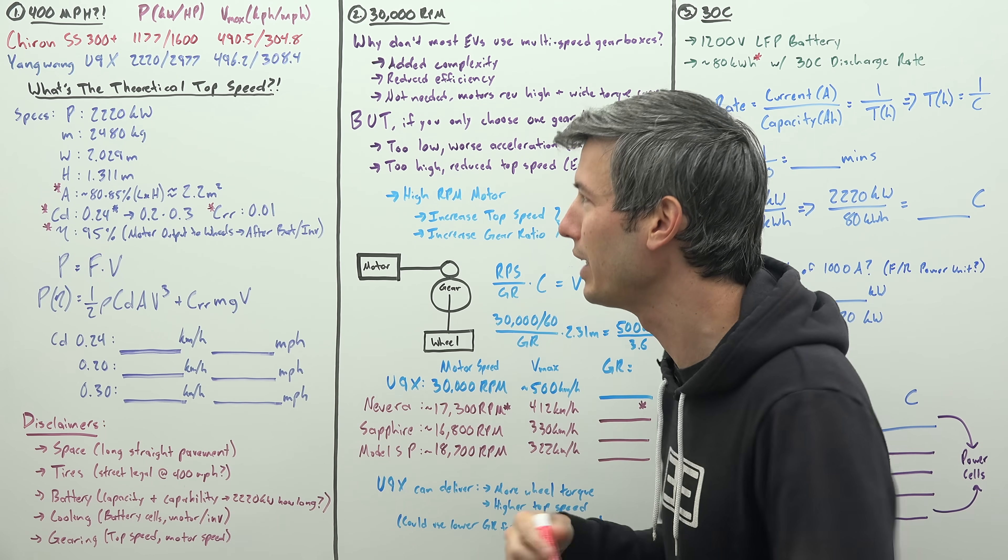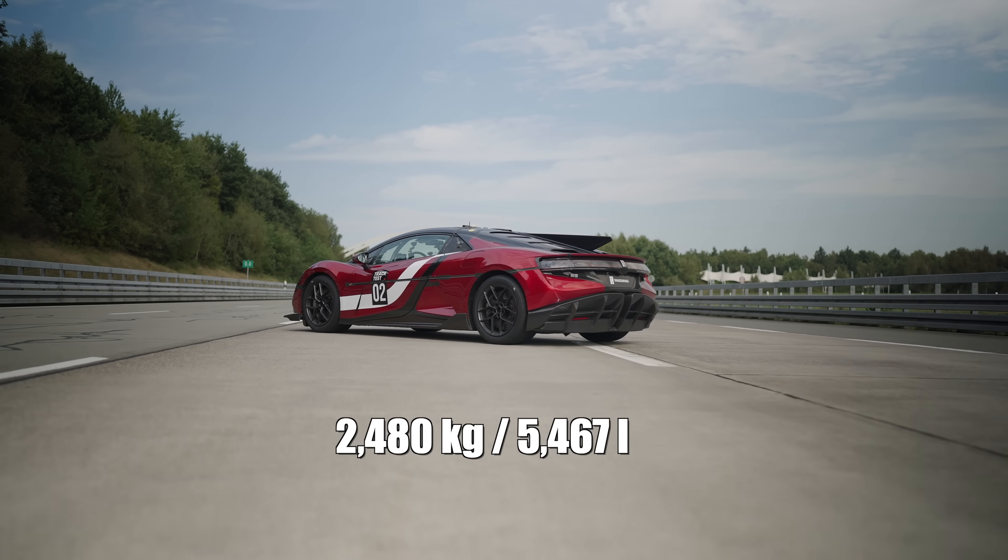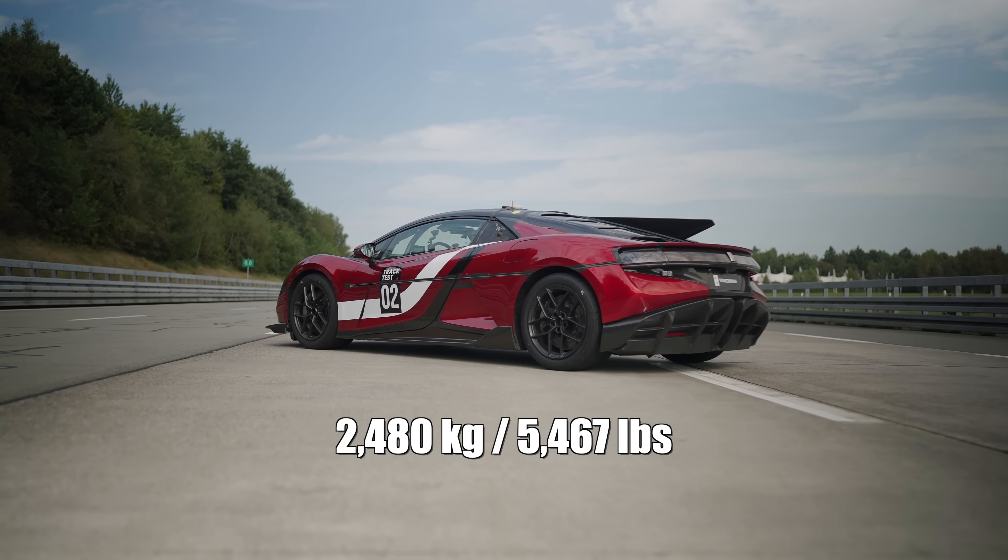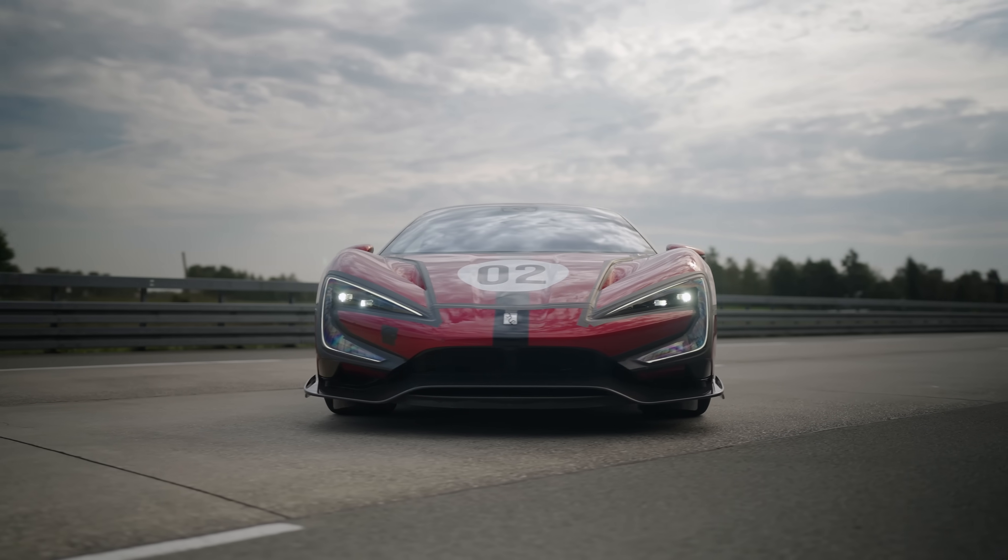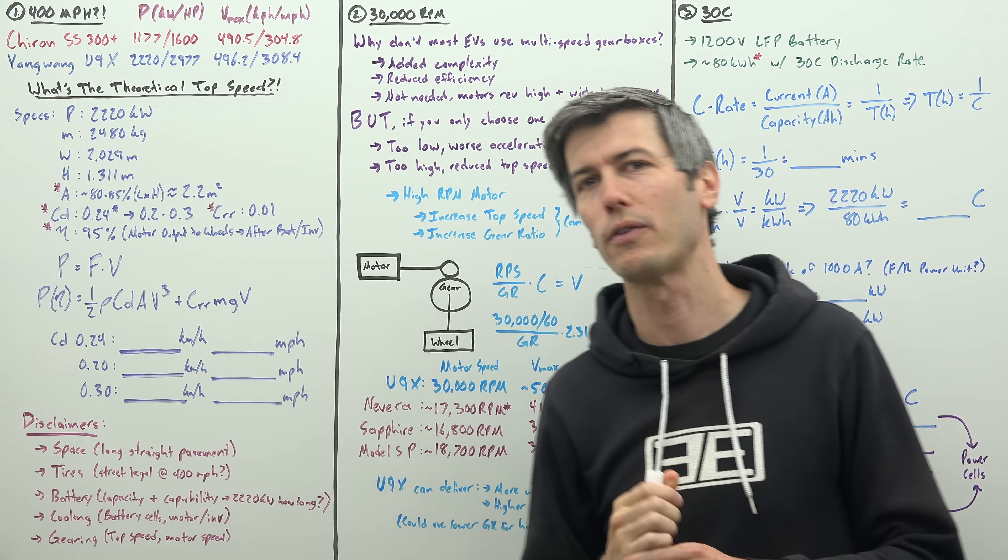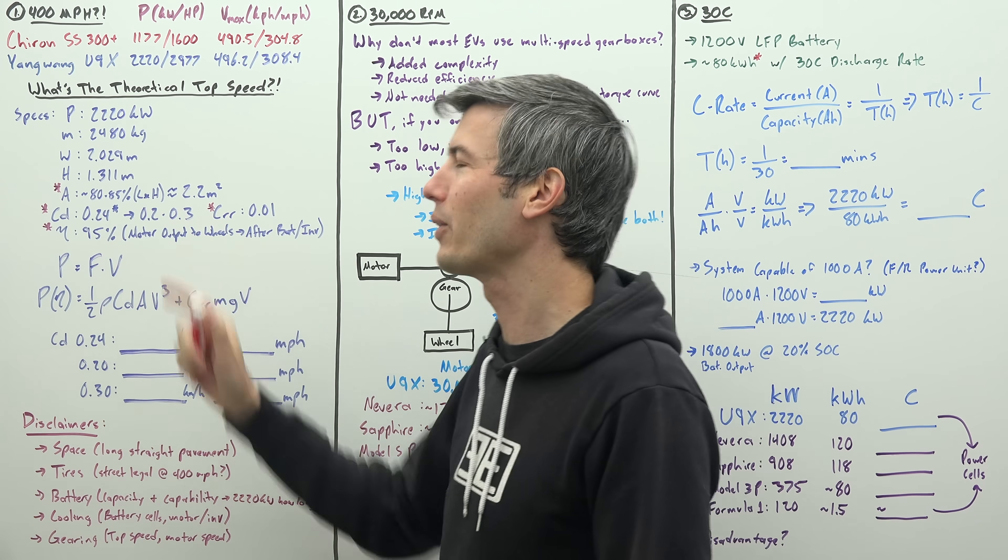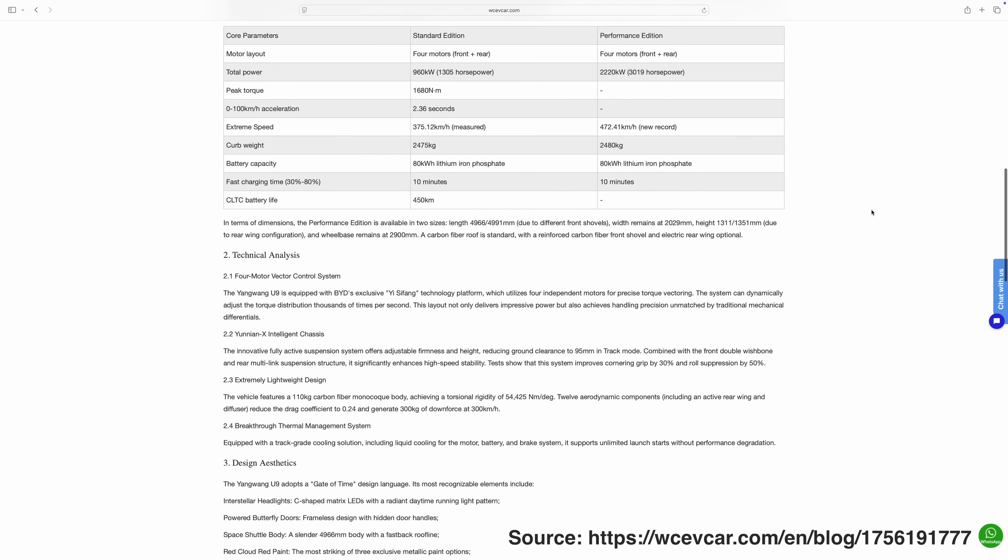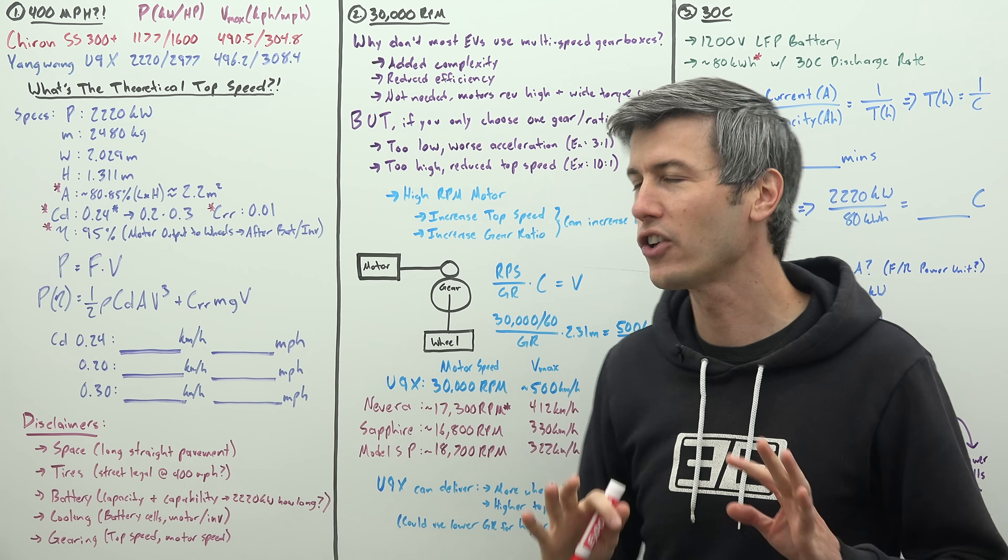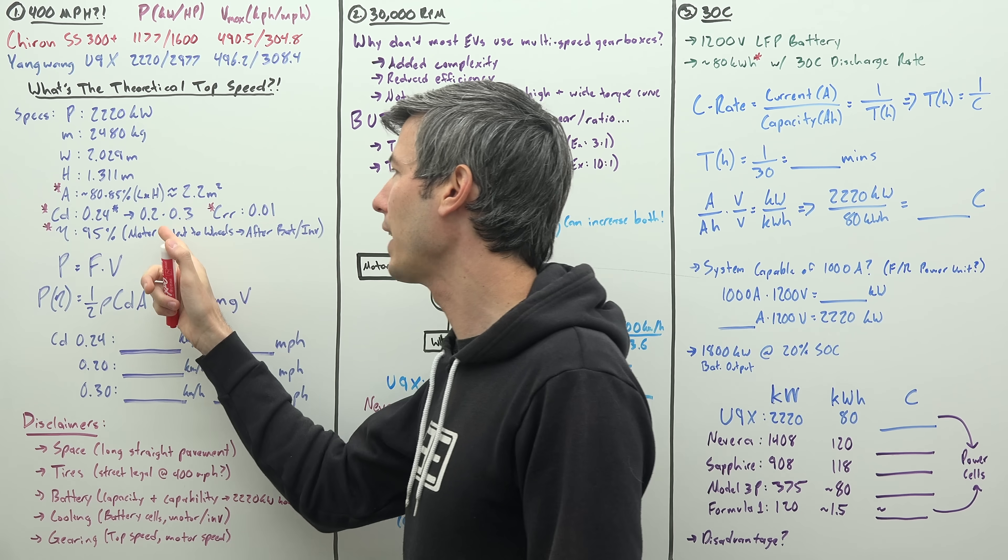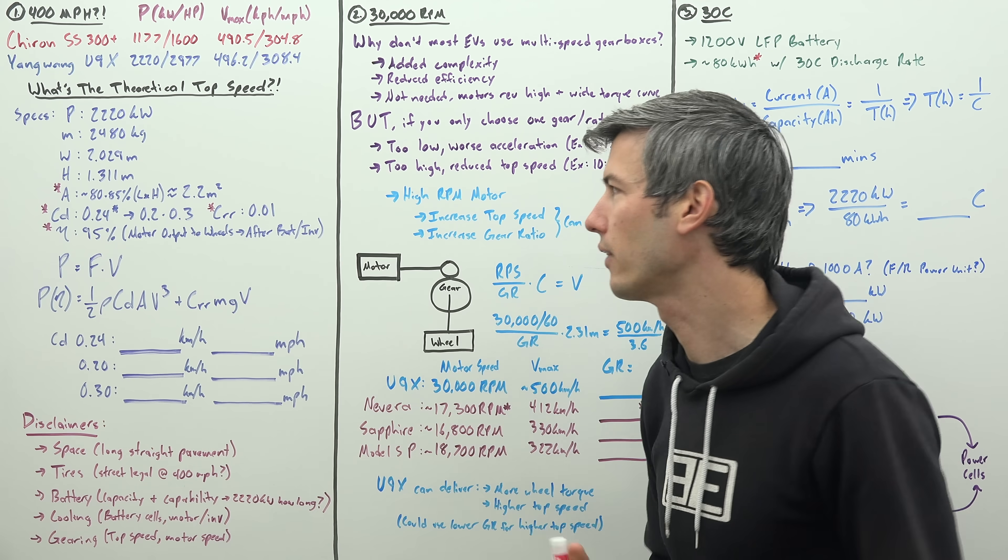So there's a few variables we need to know to calculate this. We know power, we know the weight of the vehicle quite heavy, 2480 kilograms. We know its width and its height, so we can use that to get a pretty good estimate of what its frontal area is. Now we don't know what its drag coefficient is. This hasn't been released. But I did find one website quoting it, and they seem to have all the other numbers correct. So I don't know where they got this information. We're going to use it as a guess. And then just as a safety, we're going to get a range of a drag coefficient from 0.2 to 0.3 to see where that would put that top speed at.